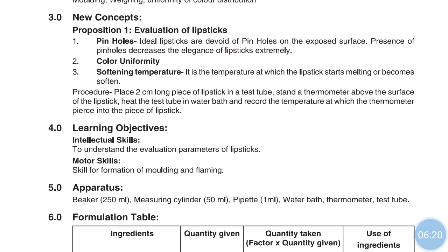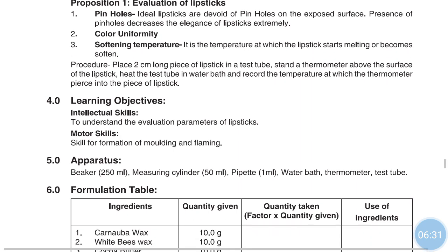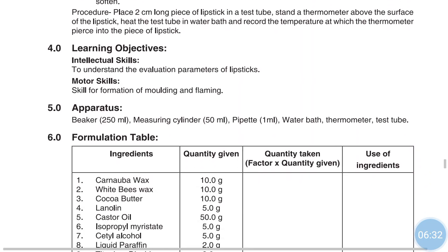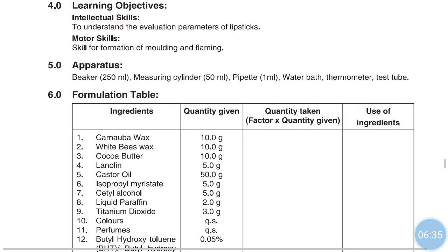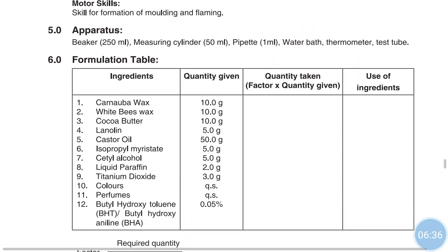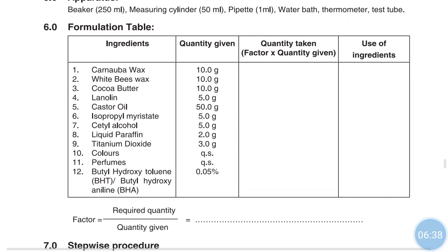The apparatus required for the preparation of lipstick includes a beaker of capacity 250 ml, a measuring cylinder of capacity 50 ml, a pipette of 1 ml, a water bath, a thermometer, and a test tube.